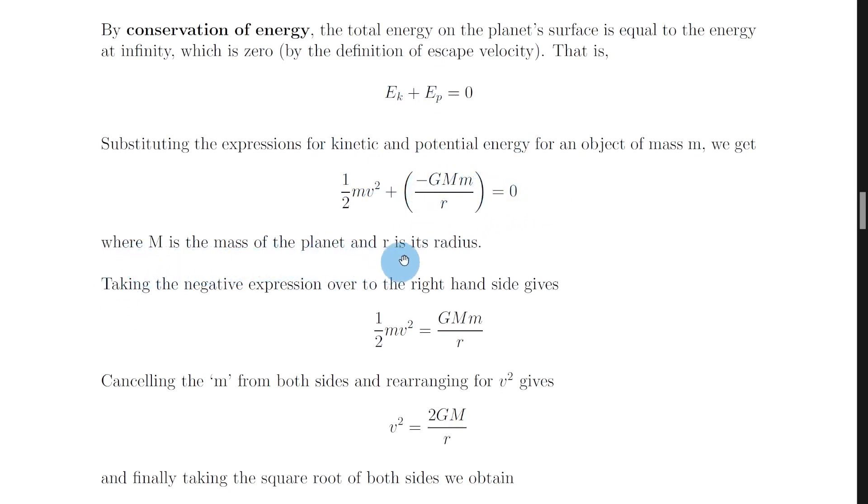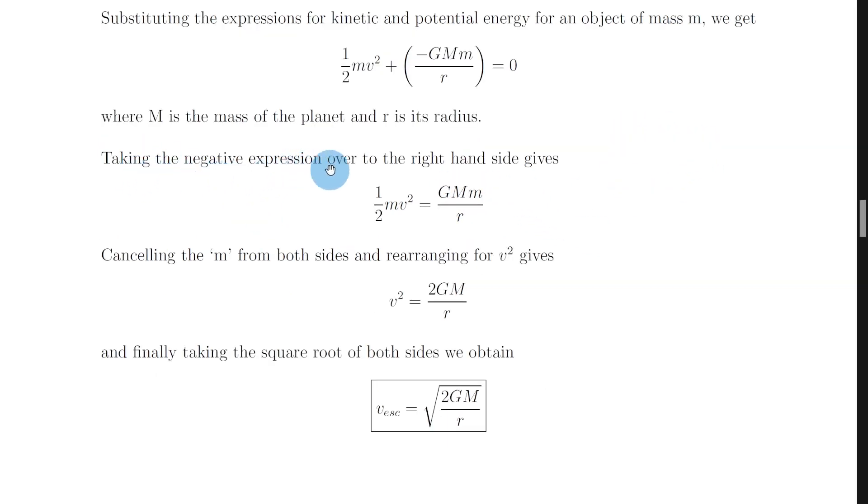where big M is the mass of the planet and r is its radius. And remember little m is the mass of the object. Then what you can do is take the negative expression over to the right hand side. So if we add GMm over r to both sides here, so because we've technically got a half mv squared minus GMm over r is equal to zero,